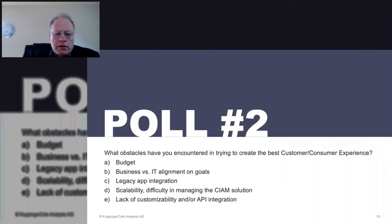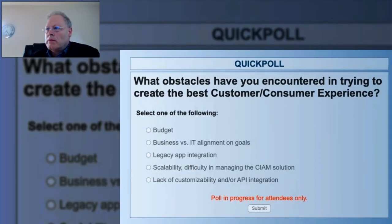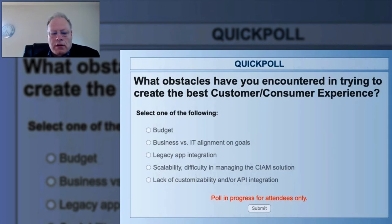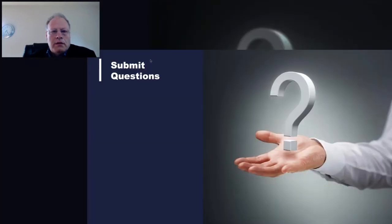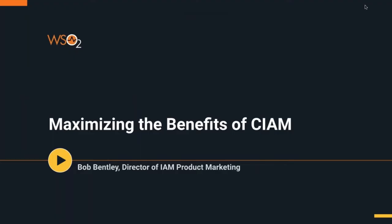Let's do our final poll question. What obstacles have you encountered trying to create the best consumer or customer experience? Is it budget that gets in the way? Is it business versus IT can't agree on the goals? Is it difficult to integrate legacy applications? Do you have problems with scalability, or lack of customizability, or a need for additional API exposure or SDKs to build applications with? We'll look at the results during Q&A. Don't forget there is a questions field in the GoToWebinar control panel — feel free to type in your questions and we'll take them at the end. With that, I'd like to turn it over to Bob.